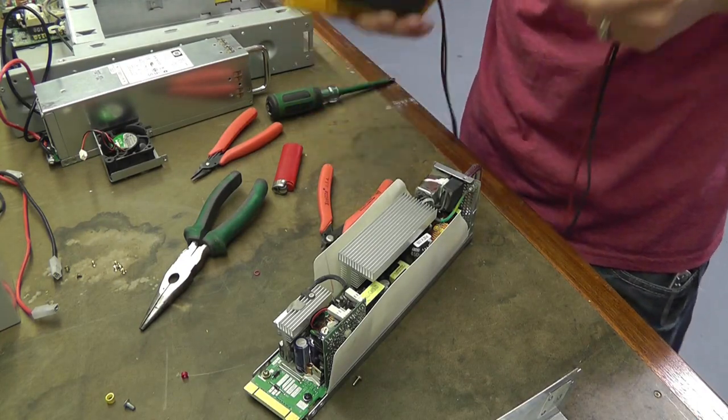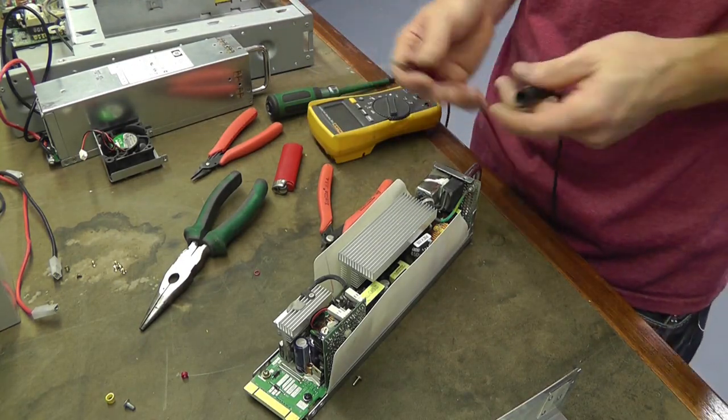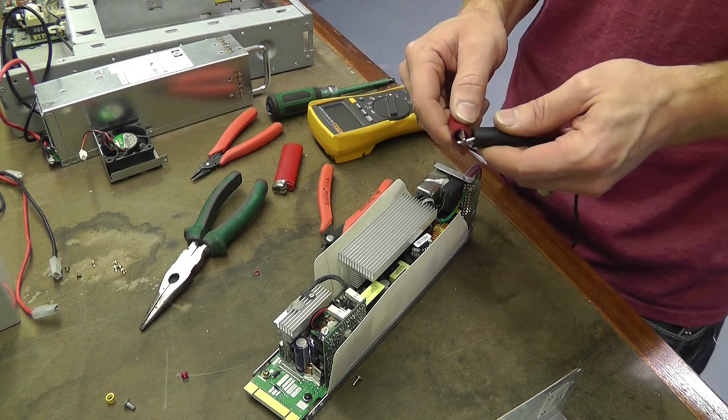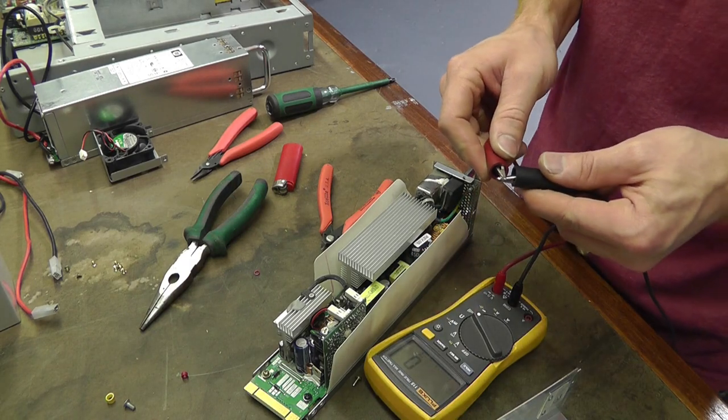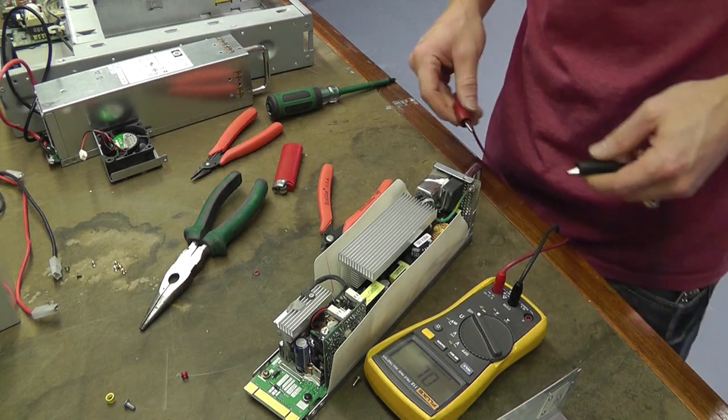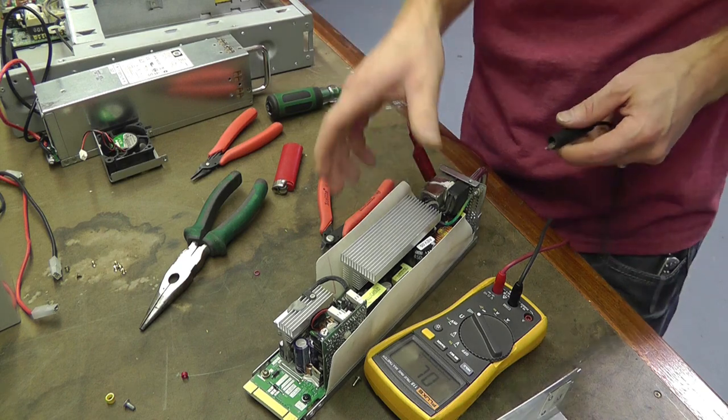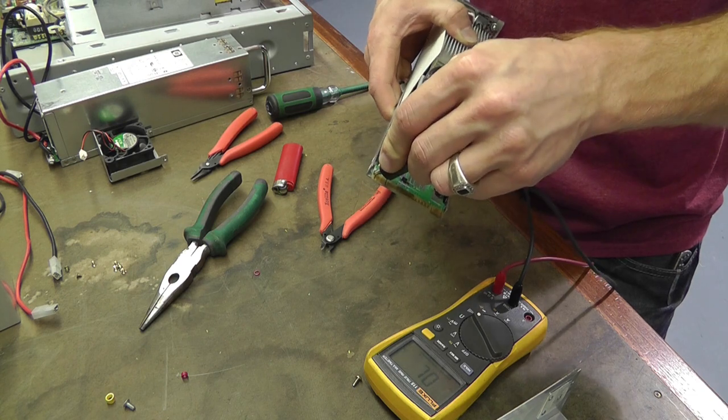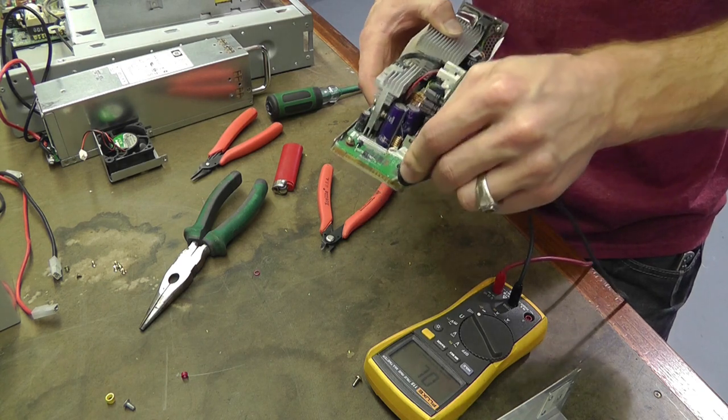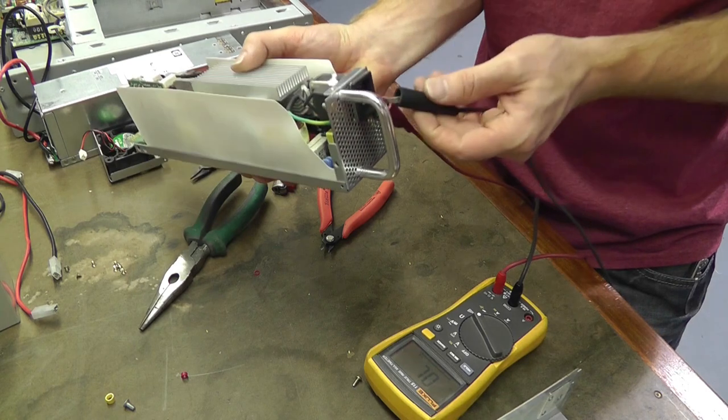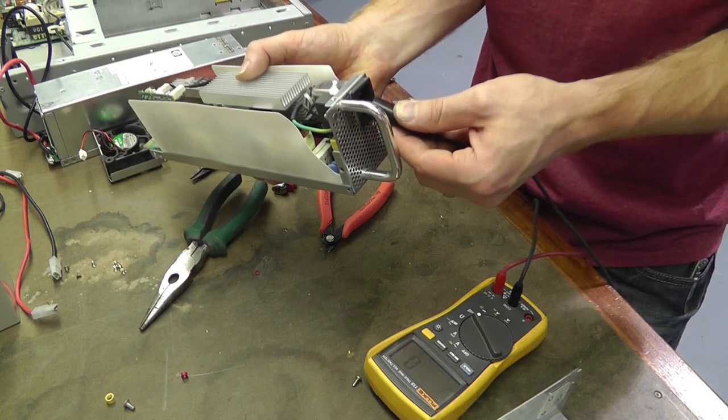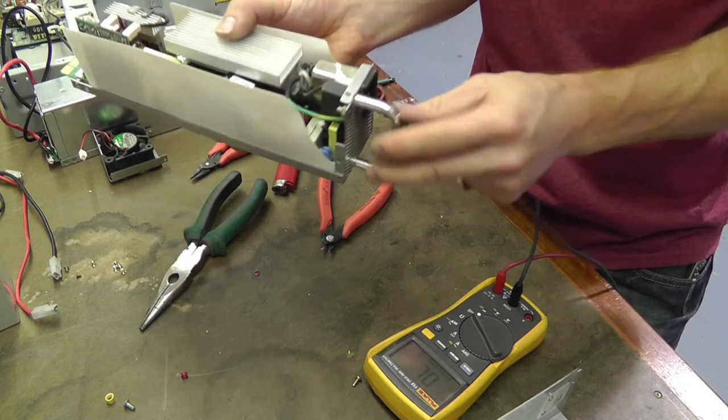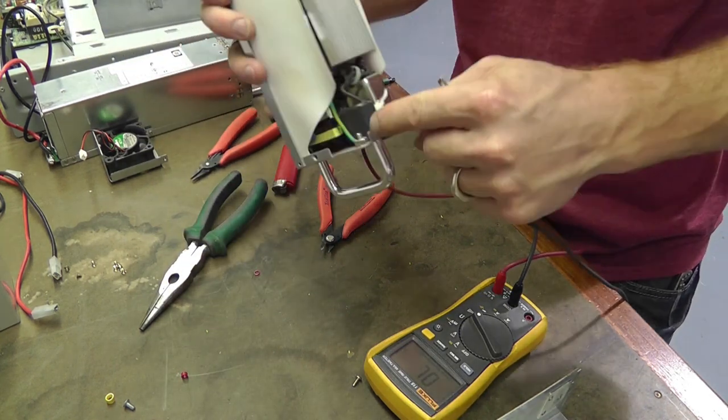Alright. So, I forgot to do the continuity test before and after. I'm going to go ahead and do the continuity test now so you can see. So, I don't know if you can hear my meter squealing. But it is. So, just, you know, check one of these to the case and test your grounds. I got complete isolation. Now, you can see if I touch my ground to my case, I still get continuity. And that's because this is still grounded and this is still grounded.